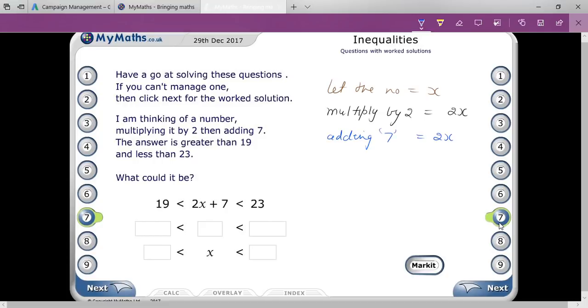Then they are saying adding 7, so that is it will be 2X plus 7. You understand up to here? Now they are saying the answer is greater than 19, so that is it will be 2X + 7 > 19. That is your first condition. Next condition, they are saying that 2X + 7 < 23.